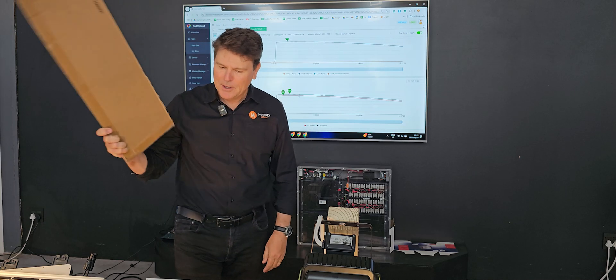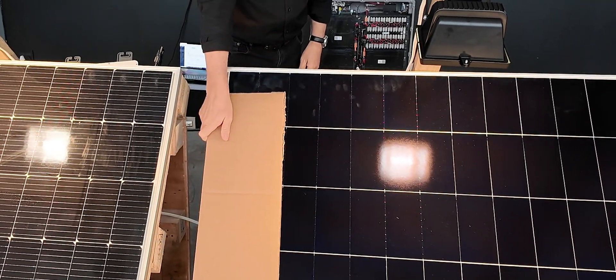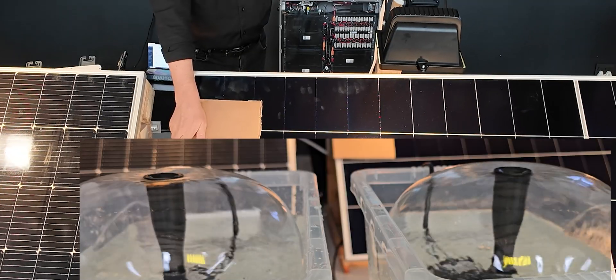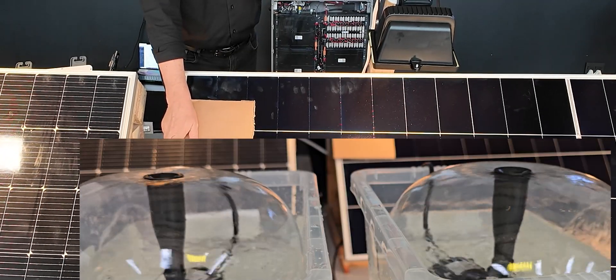I'm now going to do the same and cover the IKO solar panel and we can notice that there is barely any difference in the flow rate by shading those.